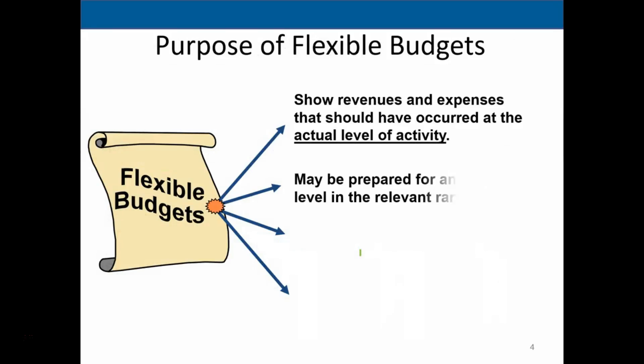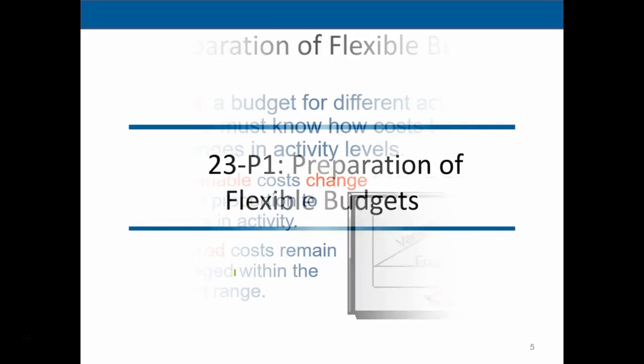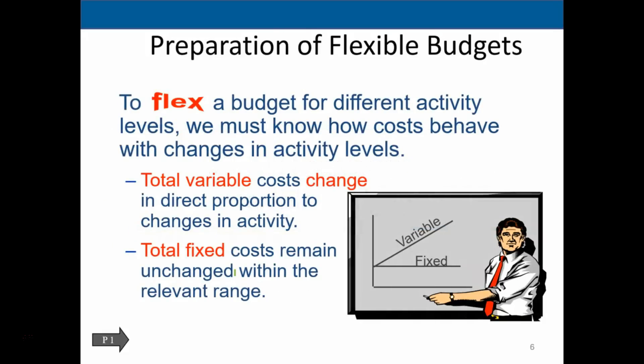Our flexible budget shows revenues and expenses that should have occurred at any activity level. We're going to adjust the budget and the expenses to reflect what we would expect to happen at different sales levels. The activity level may be prepared for any level in the relevant range, and it reveals variances due to good cost control or lack of cost control. Our goal is to measure differences, determine why they're happening, and take corrective action to improve performance evaluation.